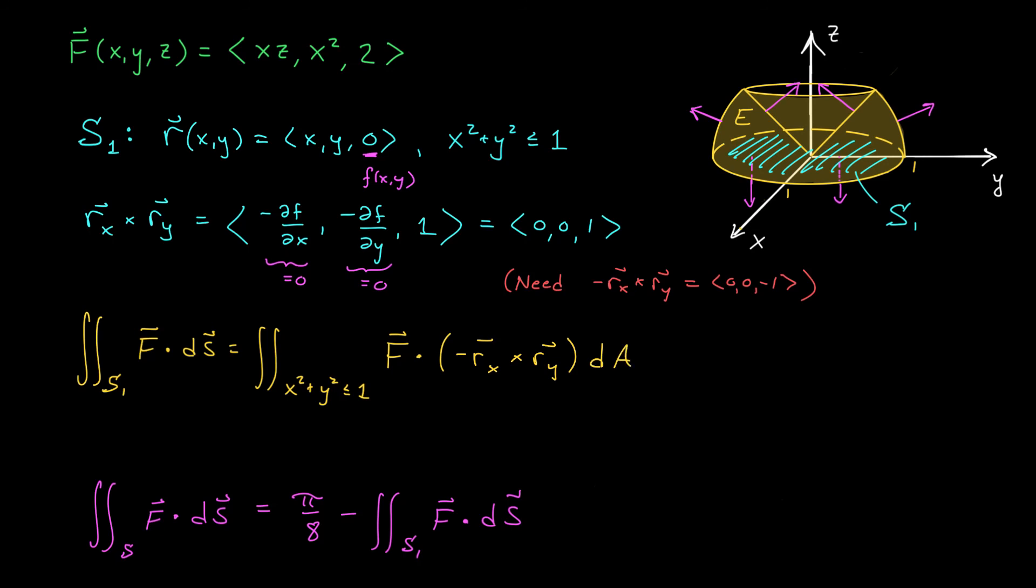Well, if we take the dot product of this vector field with the vector <0, 0, -1>, we're going to get a value of -2. So this integral is really -2 times the double integral over x² plus y² is less than or equal to 1, dA. We're integrating the constant function 1 throughout this unit circle. So that's the area of the unit circle. It's π. We get a surface integral of -2π.